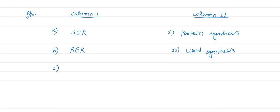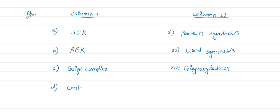Option C is Golgi complex, matched with option 3, which is glycosylation. And option D is centriole, matched with option 4, that is spindle formation.